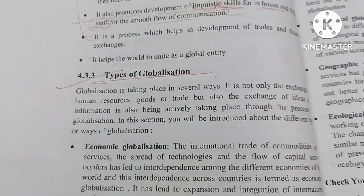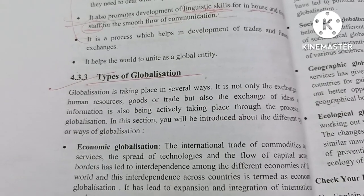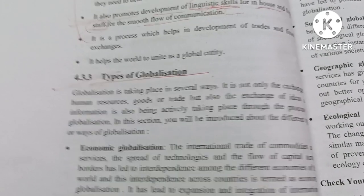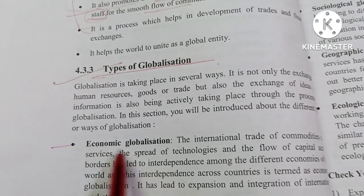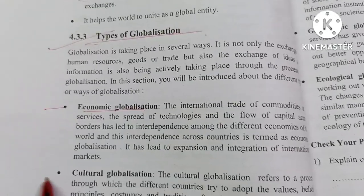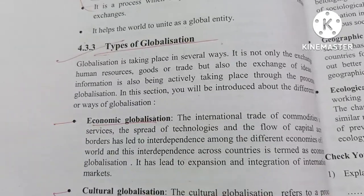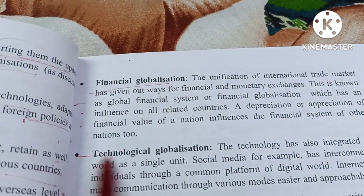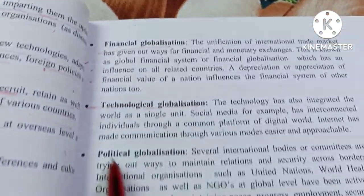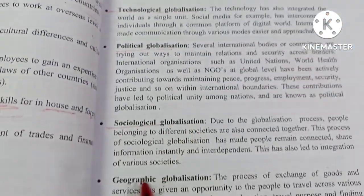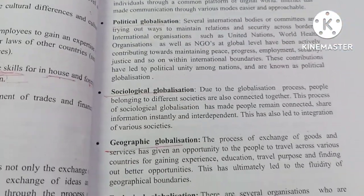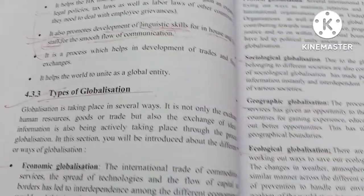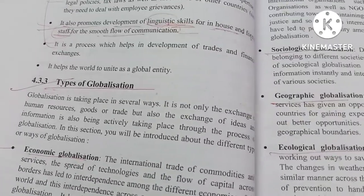Next, we have the types of globalization. I have explained globalization to you; now there are many types. First is economic globalization. Second is cultural globalization. Then there is financial globalization, then technological, political, sociological, geographical, and ecological globalization. So these are some types of globalization.